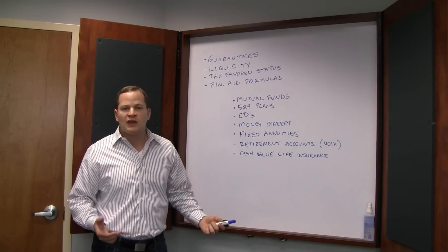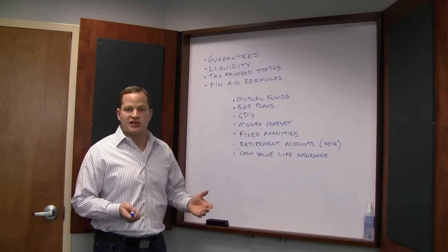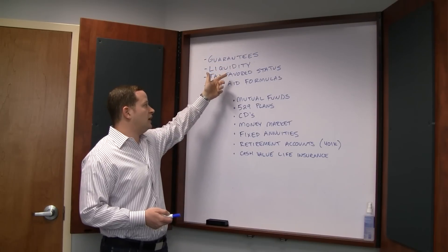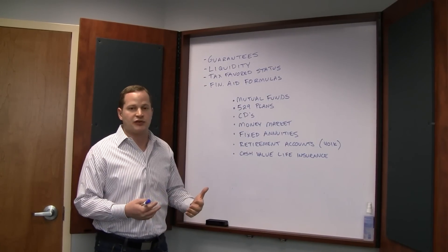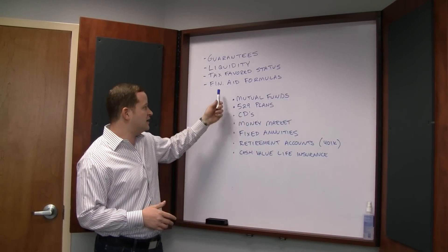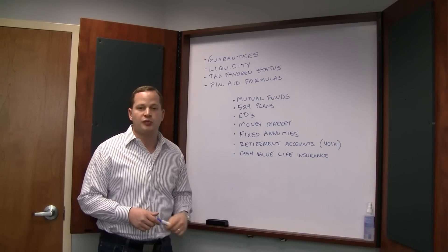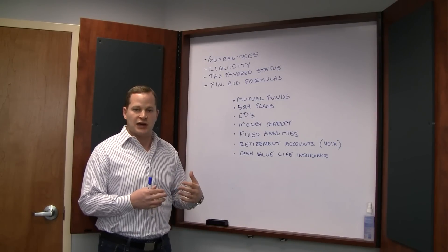Cash value life insurance - cash value life insurance can be a good tool for the right person, depending how it's set up. It offers guarantees, it offers liquidity, it offers tax favored status, whether it's either tax deferred or potentially tax-free depending on how it's set up. And it is also protected from the financial aid formulas, so it tends to be a good program depending on how it's set up. You have to make sure it's set up right, that it's overfunded so that it's focused on maximizing the growth of the policy, not the death benefit.